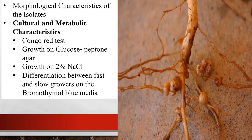For colony characterization, the shape, size, color, opacity, elevation, and edge margin of bacterial colonies and their growth rate are determined by observing colonies on yeast mannitol agar plates after growing at 30°C. Microscopic observation of the isolates is done using the gram staining technique.